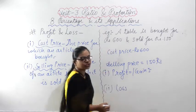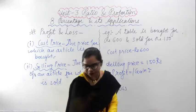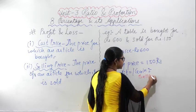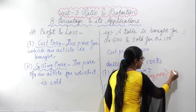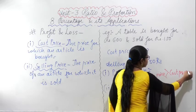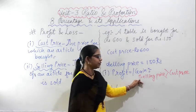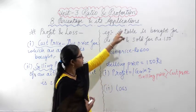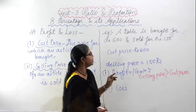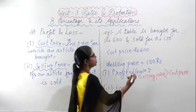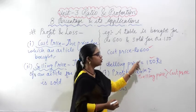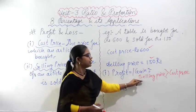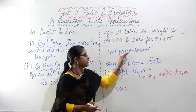For profit, the selling price must be greater than the cost price — then you are in profit. For example, you purchased the table at Rs. 600 and are selling it for Rs. 150. Here the cost price is greater than the selling price, so this is not a profit condition. For profit, selling price must be greater than cost price.